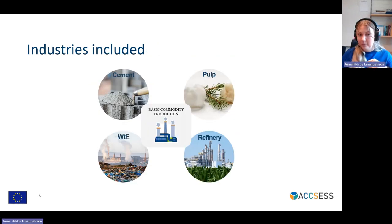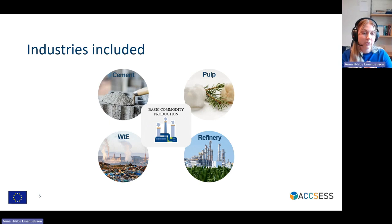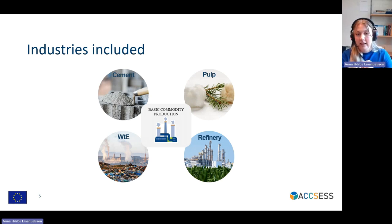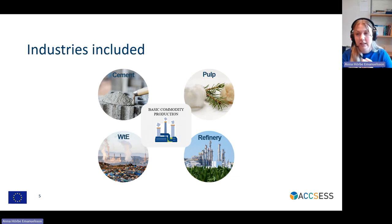As you might know, we have four different industries that are included within ACCESS, and those four are what I will be talking about today: the cement industry, pulp industry, waste-to-energy sector, and refinery sector. In the next slide, I will be showing the case studies I have been doing regarding both the costs and emissions of CCS in product value chains.